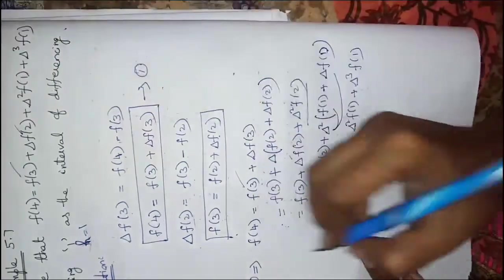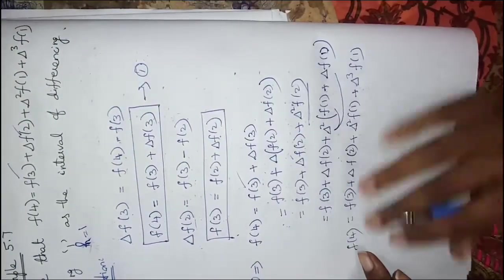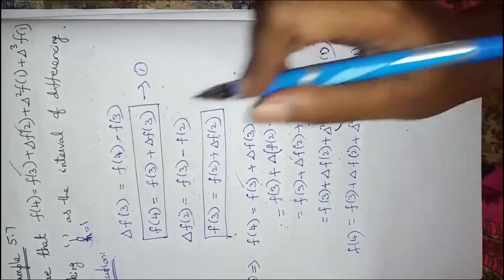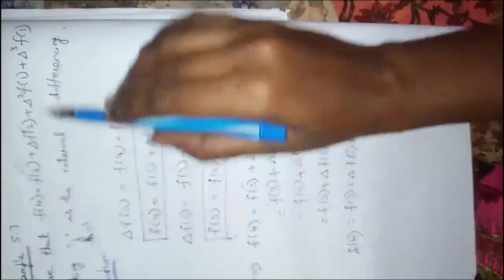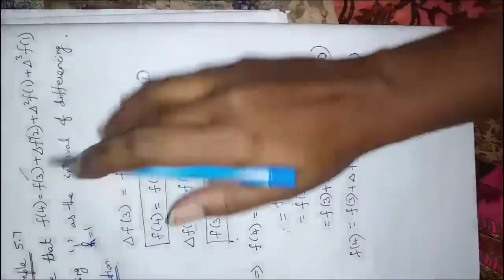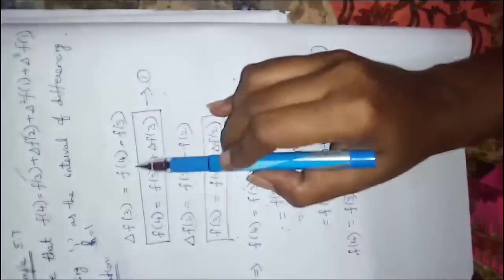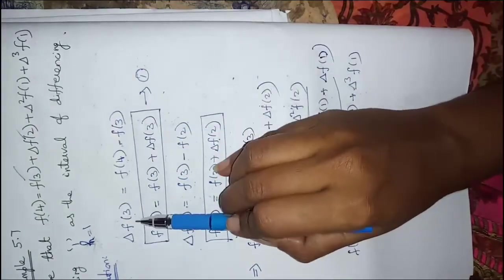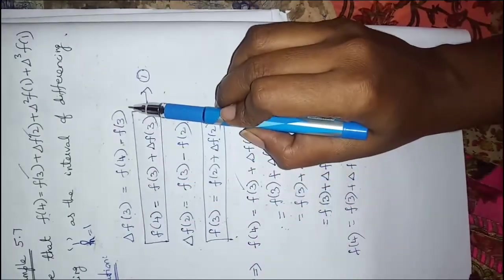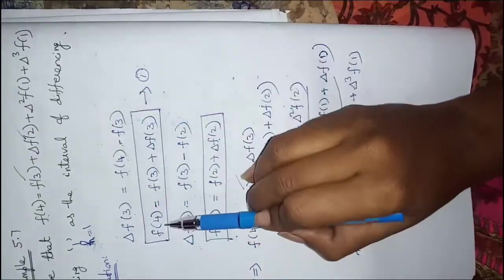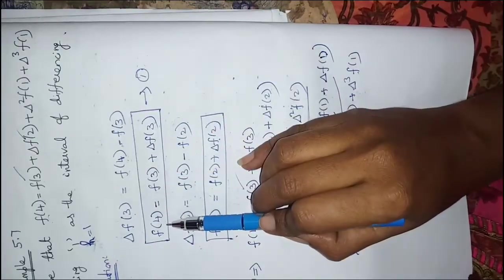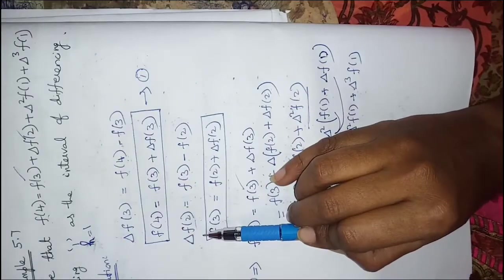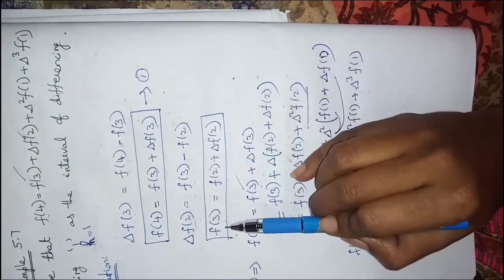The left hand side is f(4), hence the proof is verified. The right hand side is very simple. Note that the function f(4) can be expressed in terms of Δf(3). The formula here is Δf(3) = forward function minus original function. From this you find f(4), and from Δf(3) and Δf(2) you can write f(3).